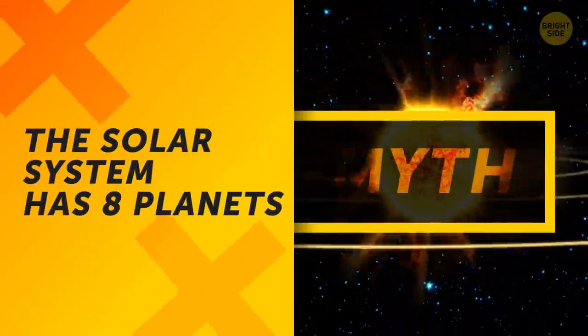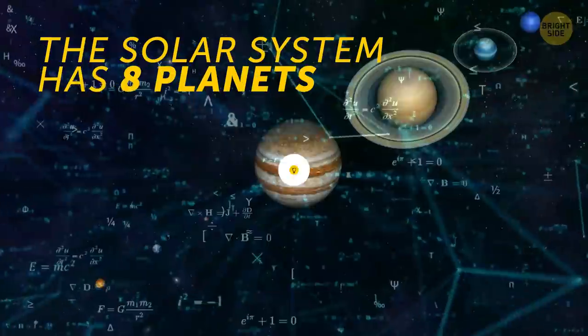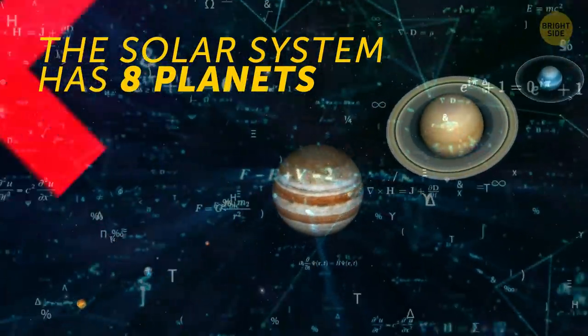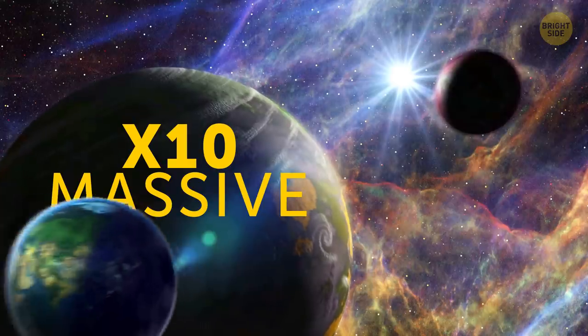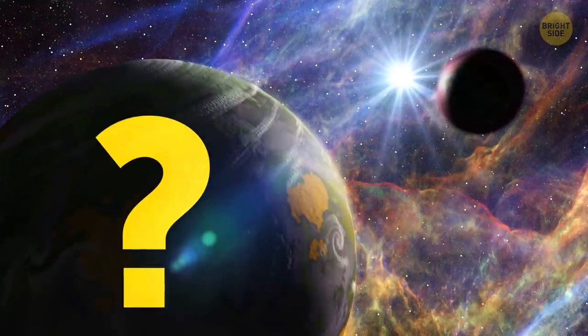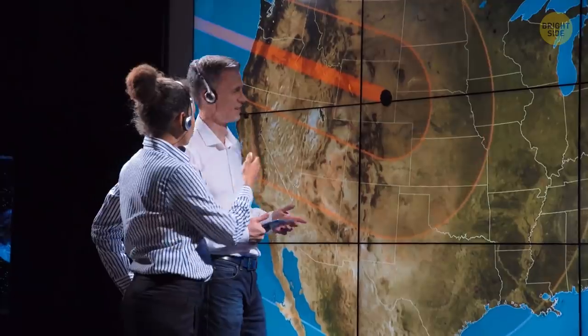The Solar System has eight planets. There's mathematical evidence that this might be wrong. But much farther from outer reaches, there should be a planet ten times more massive than Earth. No names yet. Scientists still has to confirm its existence.